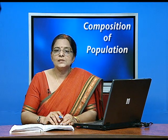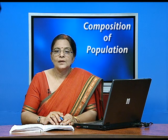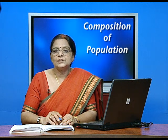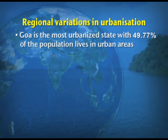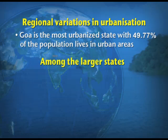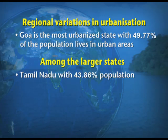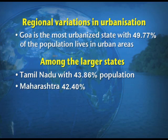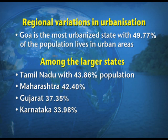There are certain regional variations in urbanization. Goa is the most urbanized state with 49.77% of the population living in urban areas. Among the larger states, Tamil Nadu has 43.86%, Maharashtra 42.40%, Gujarat 37.35%, Karnataka 33.98%, and Punjab 33.95% urban population.